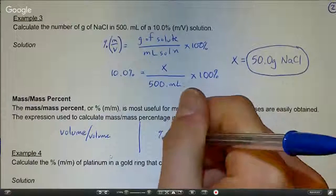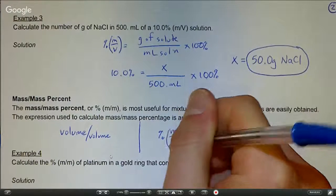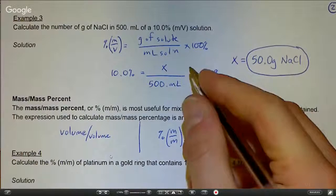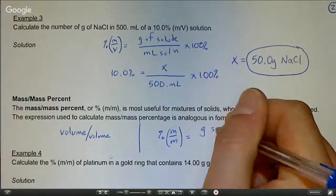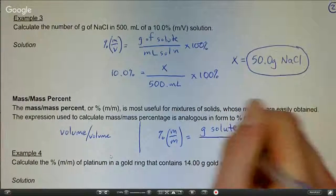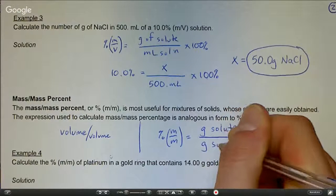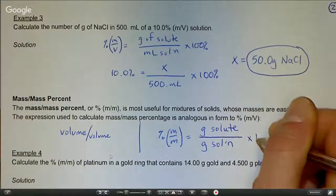Percent m over m, mass mass, equals the grams of solute over the grams of solution times 100 percent.